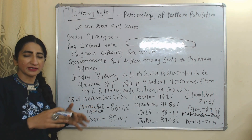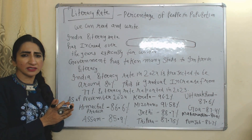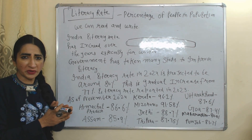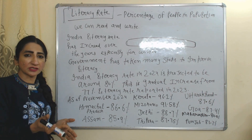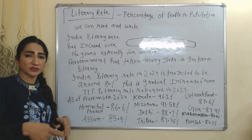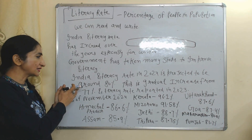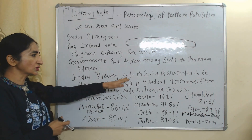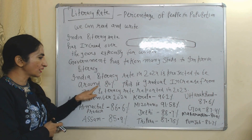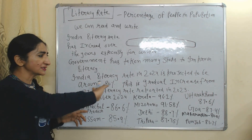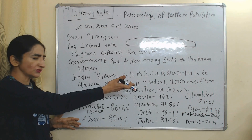The next feature is literacy rate, which means the percentage of population who can read and write. India's literacy rate is continuously improving, especially for women, and the government has taken many steps to improve it. India's literacy rate in 2024 is projected to be around 80%, gradually increased from about 77% in 2023.